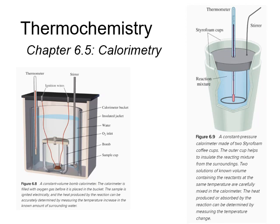We're still on thermochemistry, now on section 6.5: calorimetry. You may have heard of a calorimeter used to determine the number of calories in a substance — specifically the calories in food. We can use a calorimeter to determine the amount of calories in food. The common way this is done is with a bomb calorimeter, where you put your cookie in, light it on fire, determine how much energy was given off by the temperature change, and backtrack that to per gram of cookie.